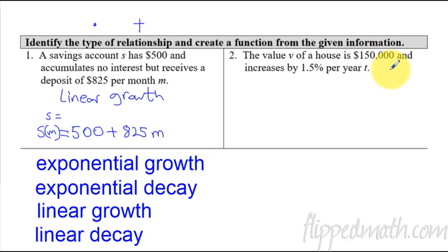Let's go to the next one. The value v of a house is $150,000 and it increases by 1.5% per year. So are we adding a certain amount every year? No. This is where it's a percent increase. This is where we're going to be multiplying. And we are going to be multiplying the base. Remember this 1.05? It's going to be 1 plus, and this is where you convert it to a decimal. Take the point, move it over twice, add it to the 1. So we're multiplying by 1.015 every time. That means this is exponential growth.